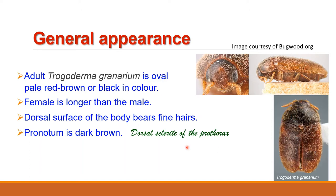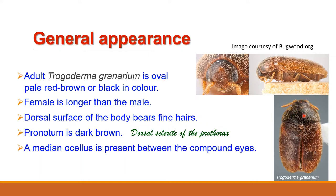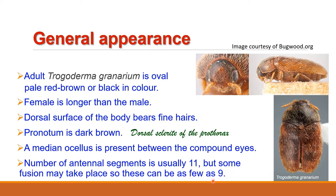The dorsal surface of the body is moderately clothed in fine hairs. The pronotum, which is the dorsal sclerite of the prothorax, is dark brown. A median ocellus is present between the compound eyes. Antennae are moderate in size, usually having 11 segments, but due to some fusion of segments these can be 9 in number. In the male, the apical segment of the club is elongated in comparison with that of the female. The antennae fit into ventral grooves in the prothorax, so this insect can easily be identified by its morphological features.